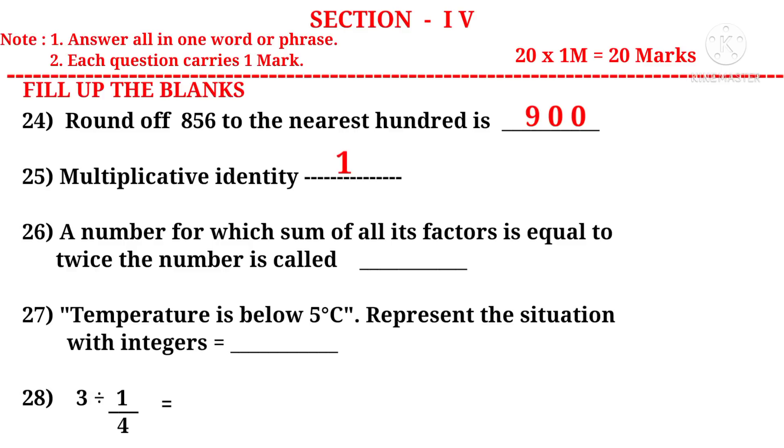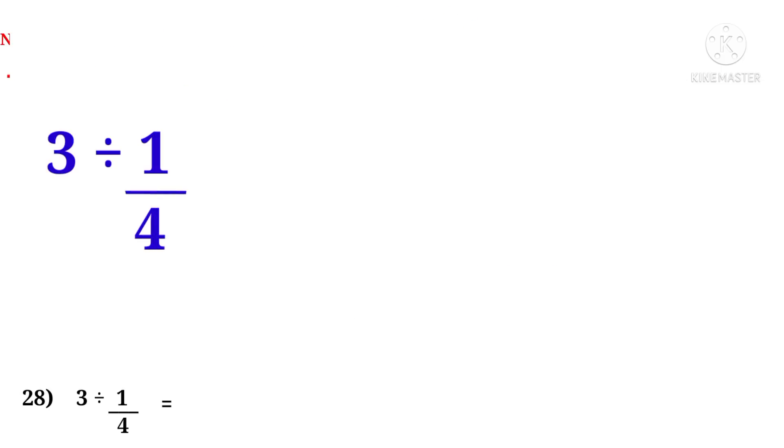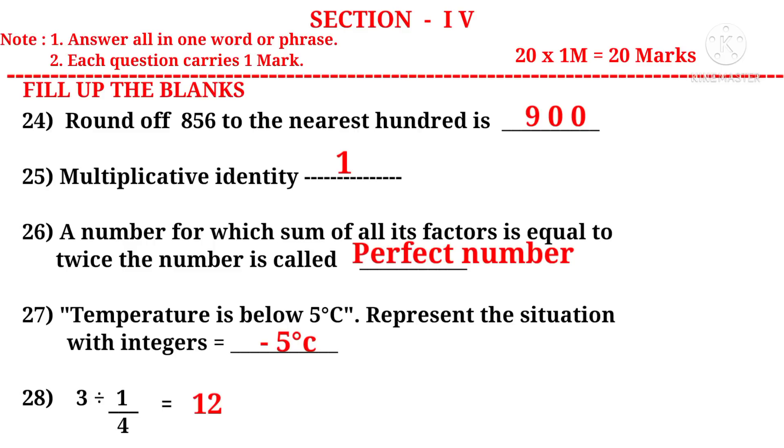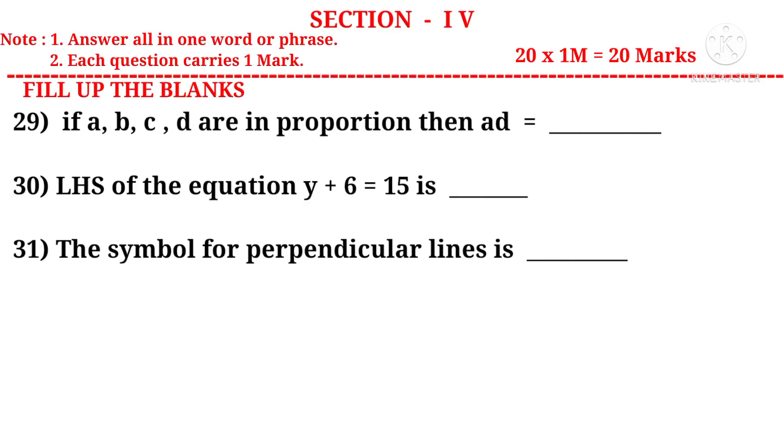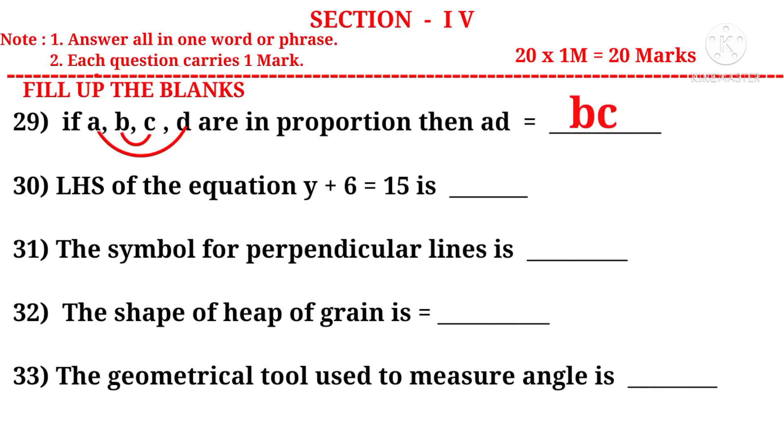27: Temperature is below 5 degrees centigrade. Represent the situation with integers. Observe the word below. It means minus. So minus 5 degrees centigrade. 28: 3 divided by 1 by 4. It can be written as 3 into 4 by 1. That is equal to 3 into 4 which is equal to 12 is the answer. Now let us take 29th question: If A, B, C, D are in proportion, then AD is equal to dash. Product of extremes AD is equal to product of means B into C. That is BC.